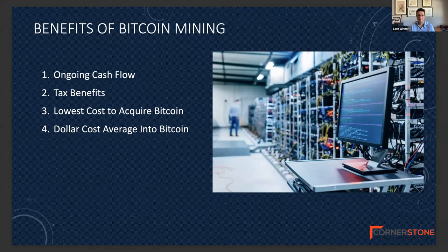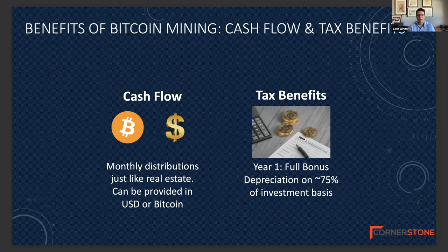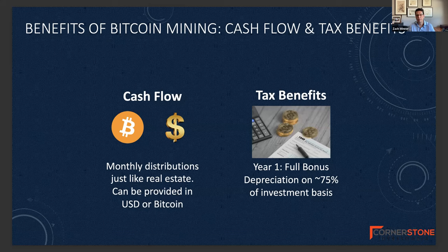Now let's talk about some of the benefits of Bitcoin mining, particularly the benefits of mining through a Bitcoin mining fund where you're doing it passively and the fund operators handle the technical aspects. A couple of the biggest benefits are cash flow and tax benefits. On the cash flow side, just like investing in a real estate syndication, when you invest in the Bitcoin mining fund, you'll receive periodic monthly distributions. Investors will have their choice of receiving distributions in either Bitcoin or U.S. dollars. There's also a significant tax benefit: investors will be able to depreciate between 70% to 75% of their initial investment as a year-one depreciation tax write-off, because about 70% to 75% of the investment goes towards purchasing the Bitcoin mining computers, which are treated as business expenses and are fully depreciable in year one.